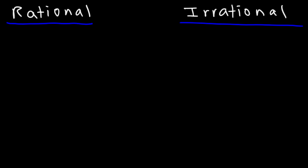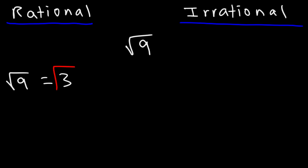Now what about square roots? For instance, the square root of 9 — would you say it's rational or irrational? The square root of 9 is 3, and 3 is an integer, and all integers are rational numbers.